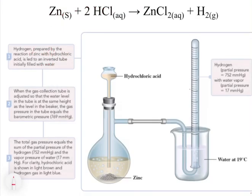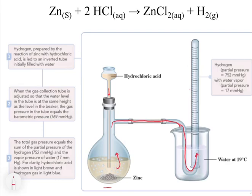In this slide, we have the example where we react zinc solid with hydrochloric acid to make hydrogen gas. All of these reactions take place with water around because the zinc solid and the HCl are in aqueous solution. We have the HCl going down into a flask where we have the zinc. These two react and we start to get bubbles of hydrogen gas, which fills up the flask and comes across a tube to fill up the collection tube on the right side.